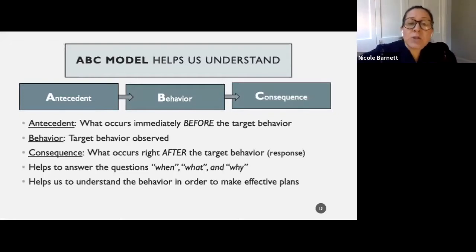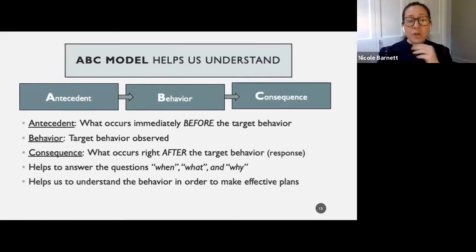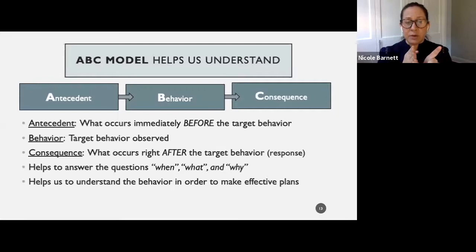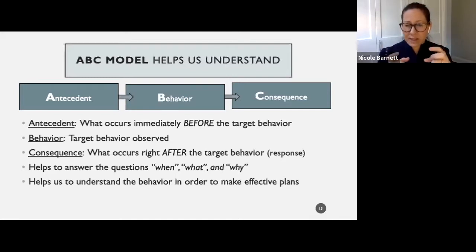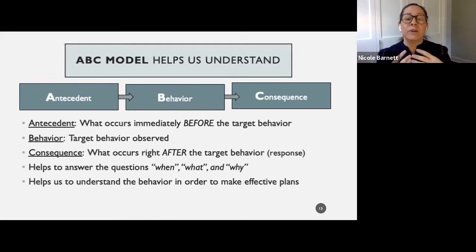And then we have the consequence, or the response — what happens right after the target behavior. When we look at antecedent, behavior, and consequence together, it's called a three-term contingency; each thing is contingent upon the other. When we look at patterns of this, it's going to help us understand when a behavior occurs, what the behavior looks like, and why it's happening. It's also going to help us create a more effective behavior plan when we know the function of the behavior.